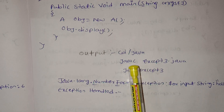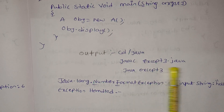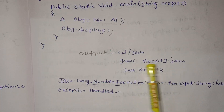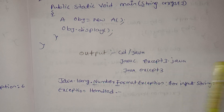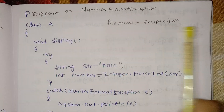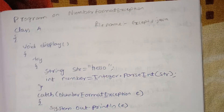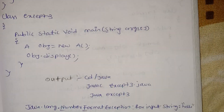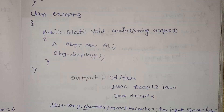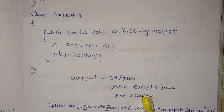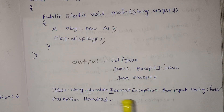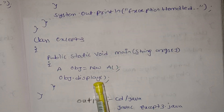The file name is javascript3.java, also referred to as except3.java. We will use the file name javascript3.java and the same as the class name. We will use the syntax for the file name, and we will use javascript3.java. We will also be working with objects and object.display.